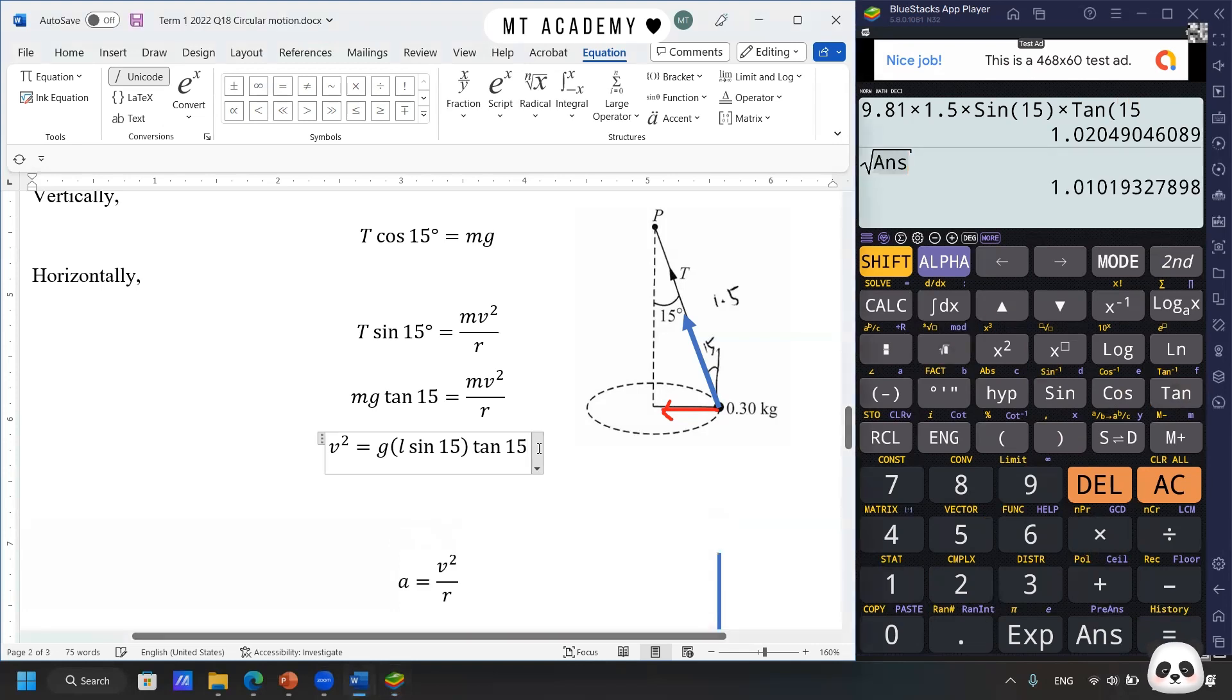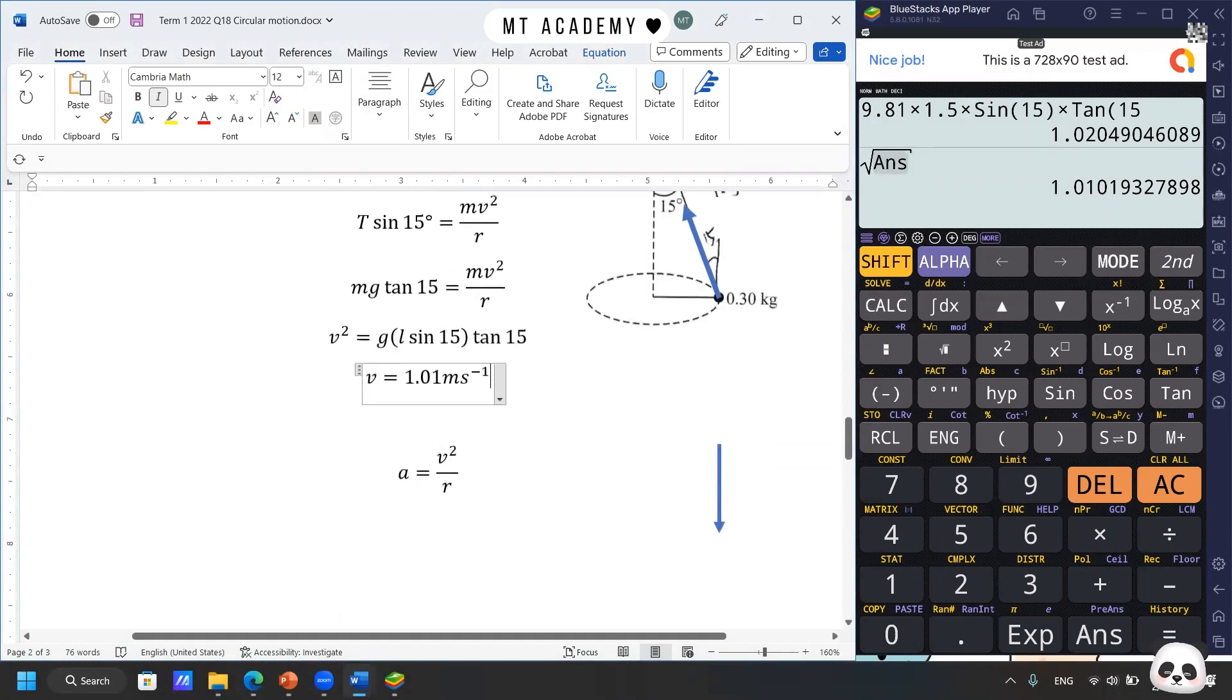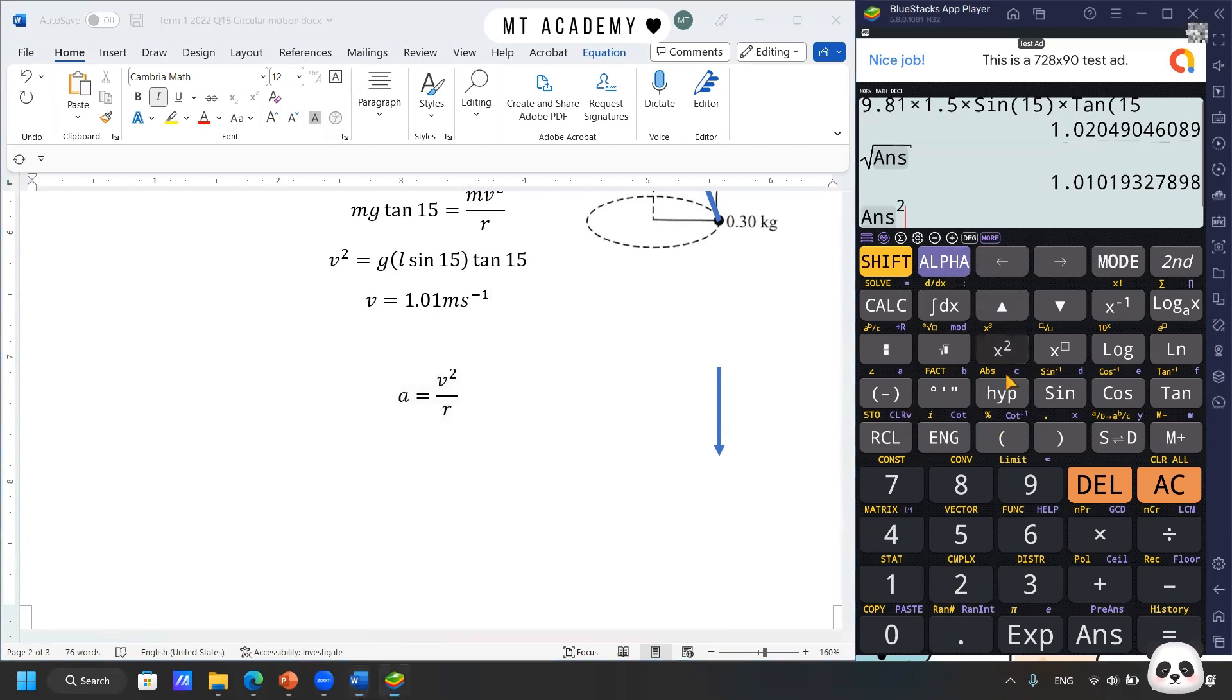Okay, so answer for the velocity is 1.01 meter per second. We move on to the next one, which is about the centripetal acceleration. So a simple a equals v² over R. So we have the v 1.01 from the previous calculation, and also the radius 1.5 sin 15°.